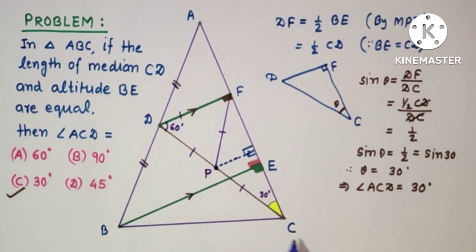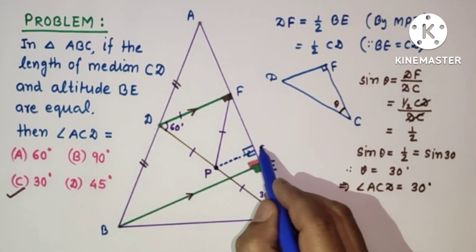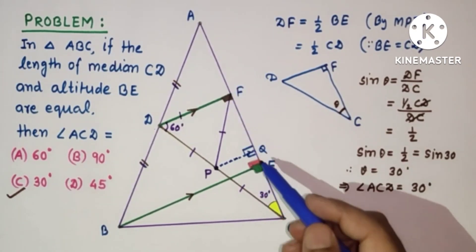And this point is midpoint. So by midpoint theorem once again, this point is midpoint of FC. Let us suppose this is Q. So FQ is equal to QC.